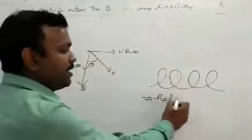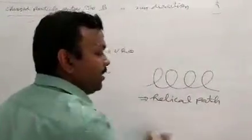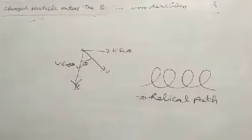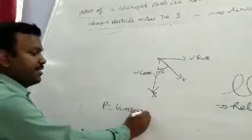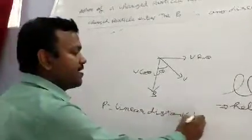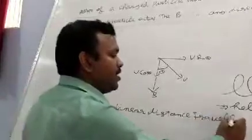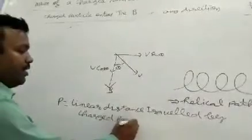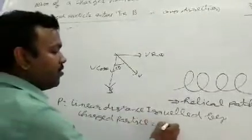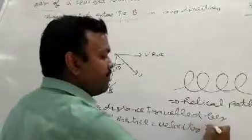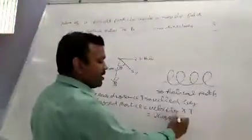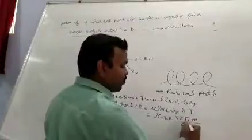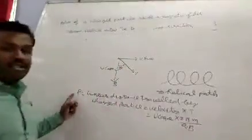As a result of it, a helical path will be obtained. The helical path is characterized by pitch. Pitch is the linear distance traveled by the charge particle, which equals velocity times time period. Velocity is v cos theta, time period is 2πm/qB. This is your pitch. Thank you very much.